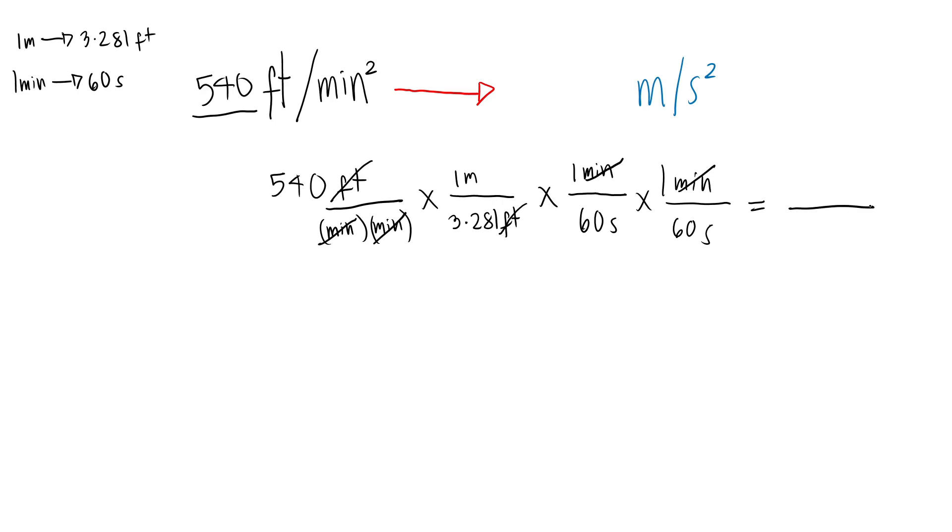So that is equivalent to, the remaining units are meter and seconds times seconds. Well, seconds times seconds we can rewrite as second squared. Seconds is in denominator and the meter is in numerator.